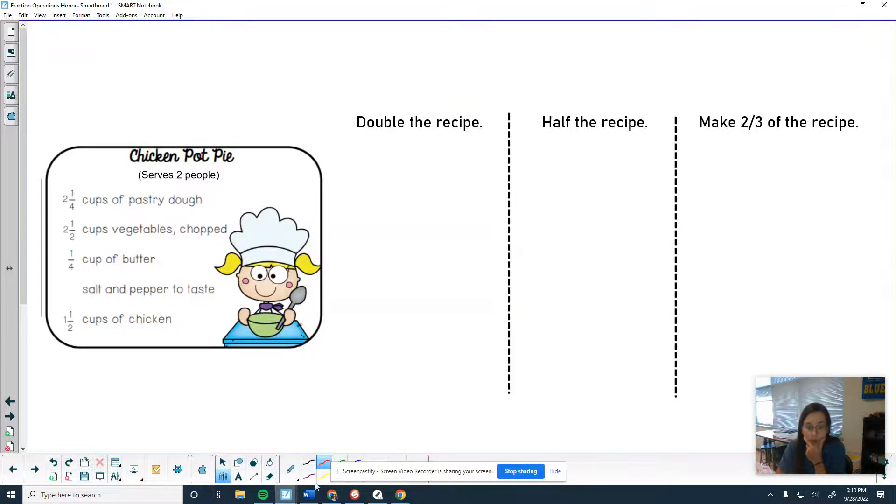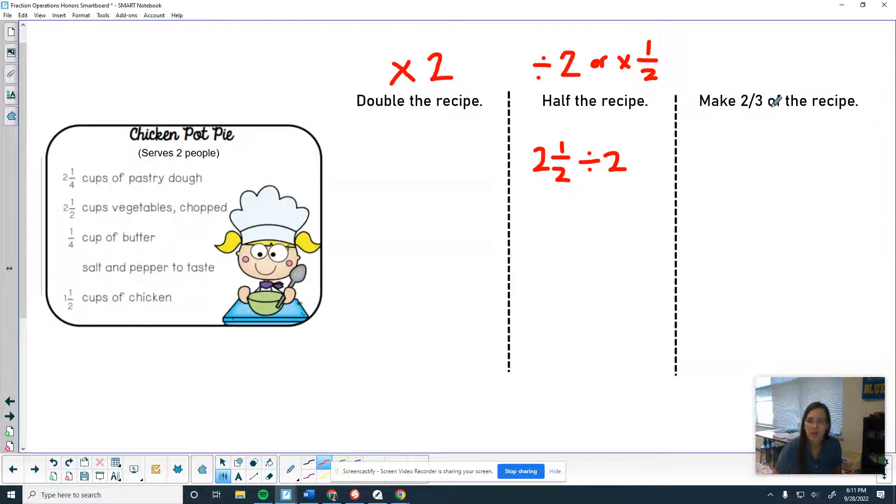So if we're going to double the recipe, we would multiply everything by two. I feel like it would probably just be easier to add it twice. So you could do like 2 and 1/4 plus 2 and 1/4 to double that. Two and a half plus two and a half, 1/4 plus 1/4. You get the idea. If you're going to half the recipe, obviously that means you're going to divide it by two. But if you think about it, that also is the same thing as multiplying it by a half. So for example, if I'm trying to do 2 and 1/4 divided by two, if I'm trying to half that, I would do keep, change, flip, and then it would be two and a half times a half. So you're basically just going to be multiplying each of these by a half. And then if you're making 2/3 of the recipe, remember yesterday I told you of means multiply. So that means you would multiply everything by 2/3.